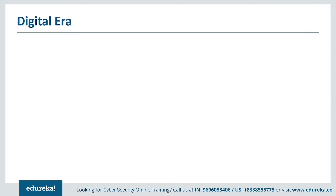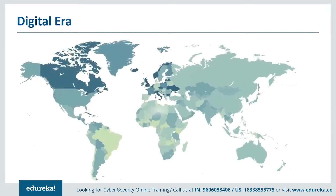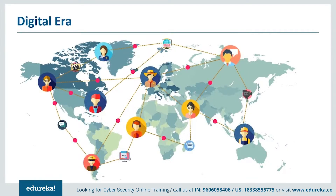The internet today informs, entertains, and connects us. It's the backbone of the global economy. Devices connected through the internet and other networks open up a world of possibilities — we can access information without storing it permanently, and communicate with others across the world. But these connections also leave our devices vulnerable to damage and our information vulnerable to theft.